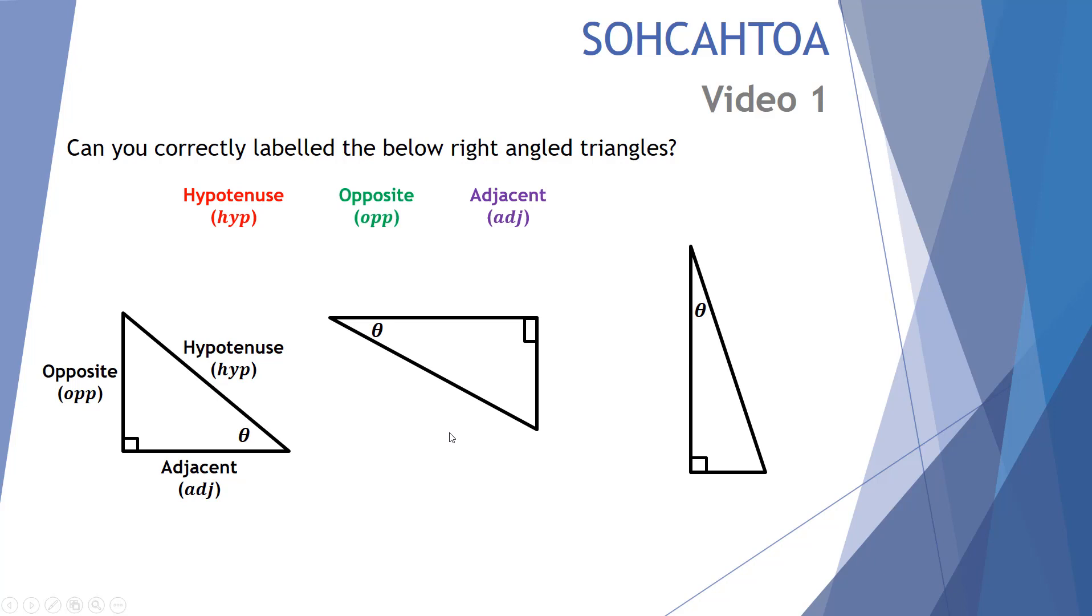Second example: again the opposite. Here's our two lengths that make the angle theta, and the third one is the opposite. The hypotenuse is the largest side length, and the adjacent is the final one that is next to the angle theta.